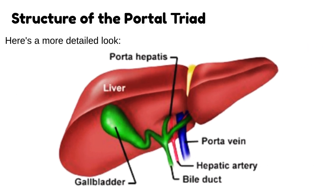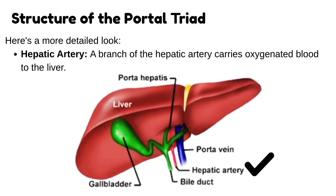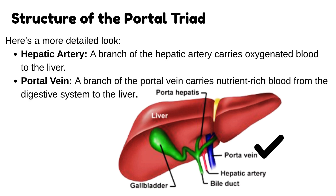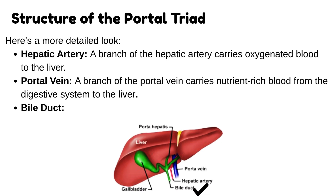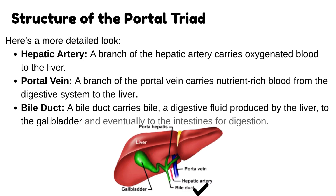Here's a more detailed look. Hepatic artery: a branch of the hepatic artery carries oxygenated blood to the liver. Portal vein: a branch of the portal vein carries nutrient-rich blood from the digestive system to the liver. Bile duct: a bile duct carries bile, a digestive fluid produced by the liver, to the gallbladder and eventually to the intestines for digestion.